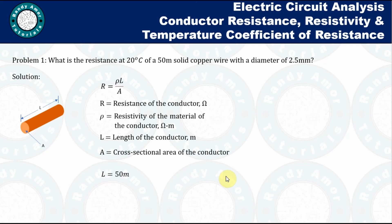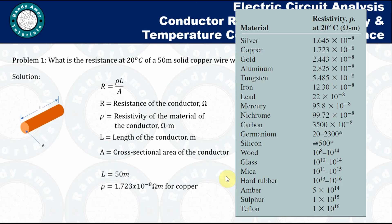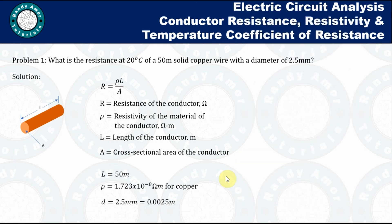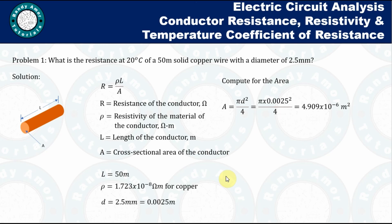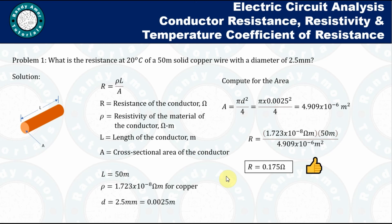Our length is 50 meters. The resistivity of copper is 1.723 × 10⁻⁸ ohm-meters. The diameter is 2.5 millimeters or 0.0025 meters. The cross-sectional area is A = πd²/4, which gives 4.909 × 10⁻⁶ square meters. Substituting: R = (1.723 × 10⁻⁸ × 50) / (4.909 × 10⁻⁶) = 0.175 ohms.